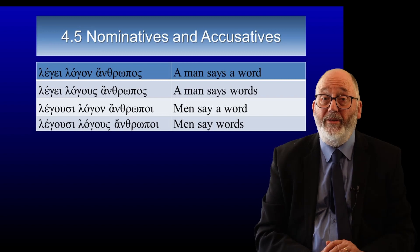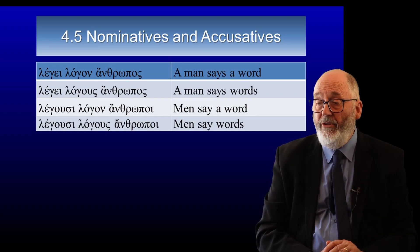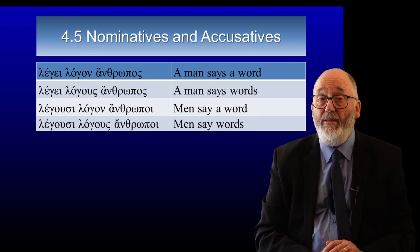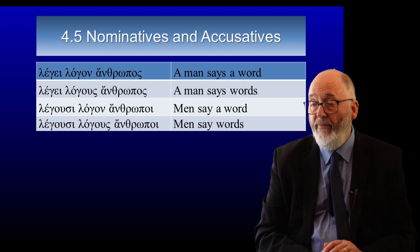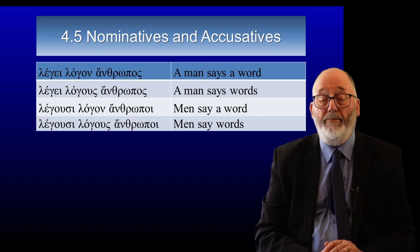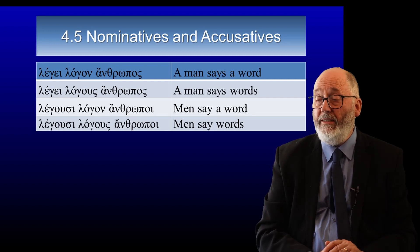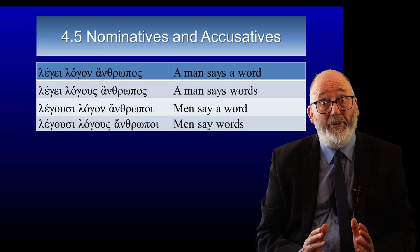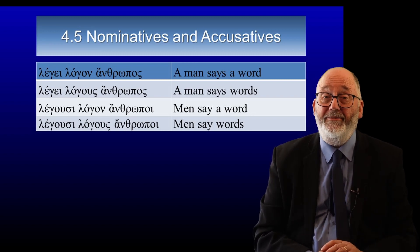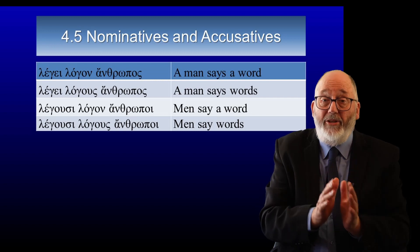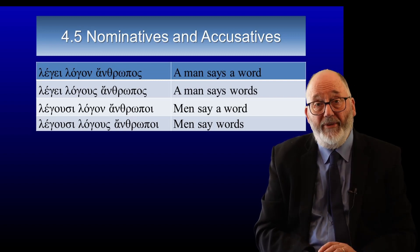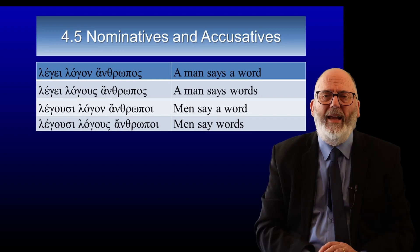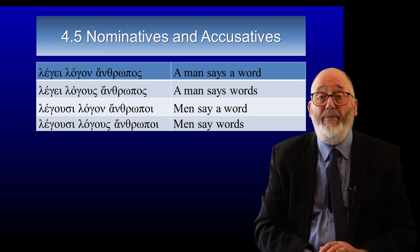One thing you will want to notice is that the verb becomes plural only when the subject is plural. So it's legousin logon anthropoi — legousin logous anthropoi. The legousin is a plural verb because the subject is plural. The subject is anthropoi. How do we know it is the subject? Because it is in the nominative case. Because the position of the noun is not as important in Greek, the nominative case shows that this is the subject, and Greek sometimes puts it further back in the sentence.